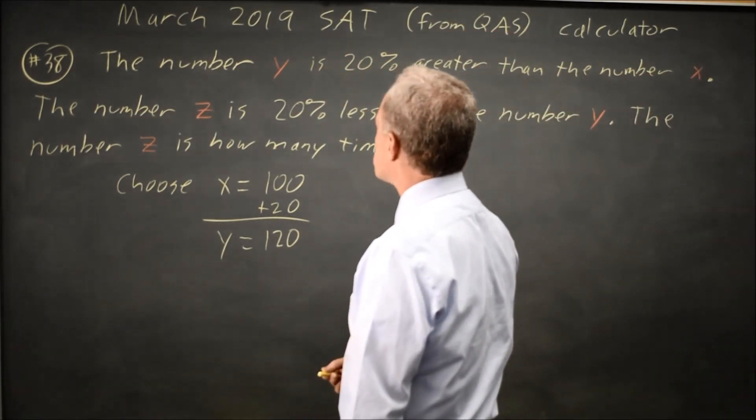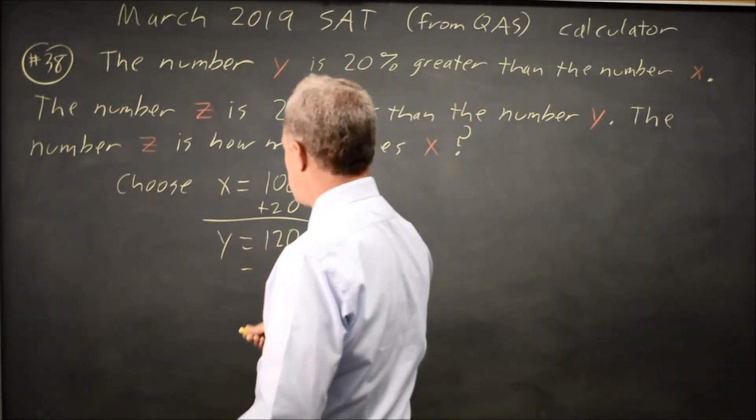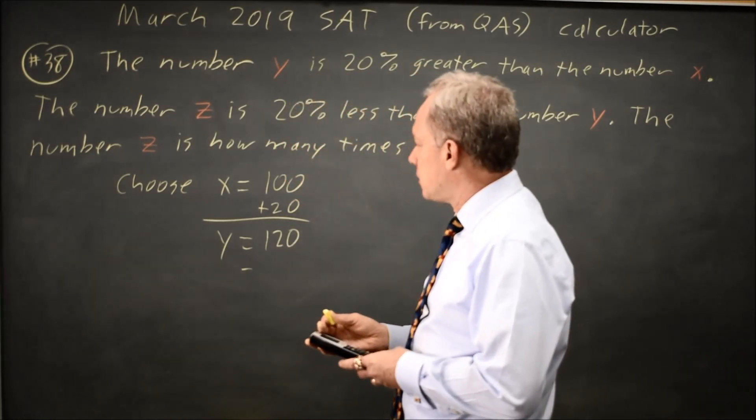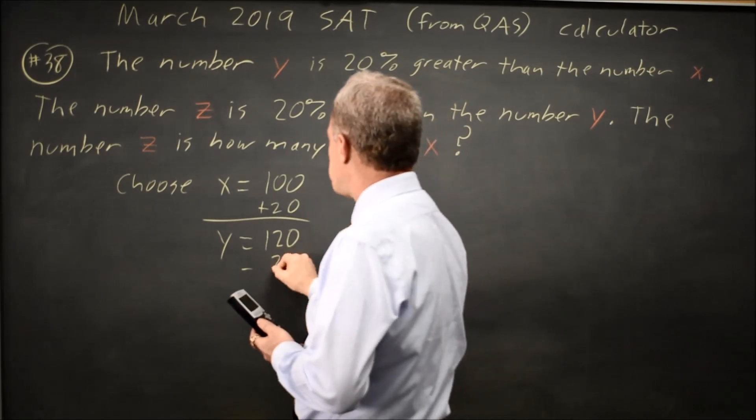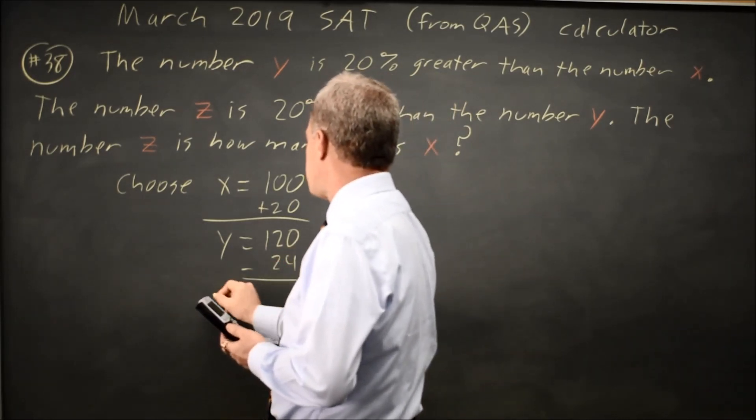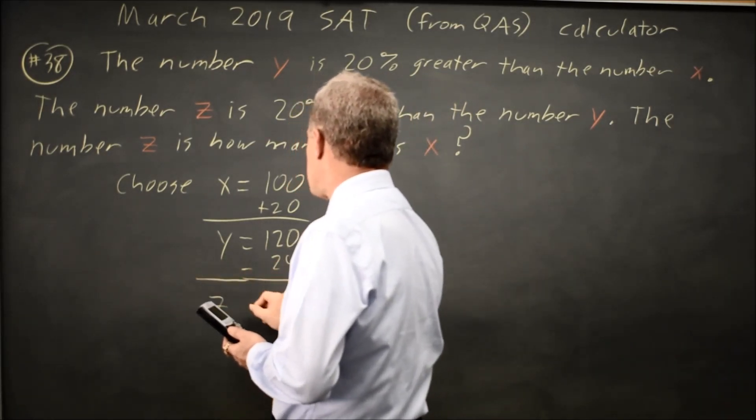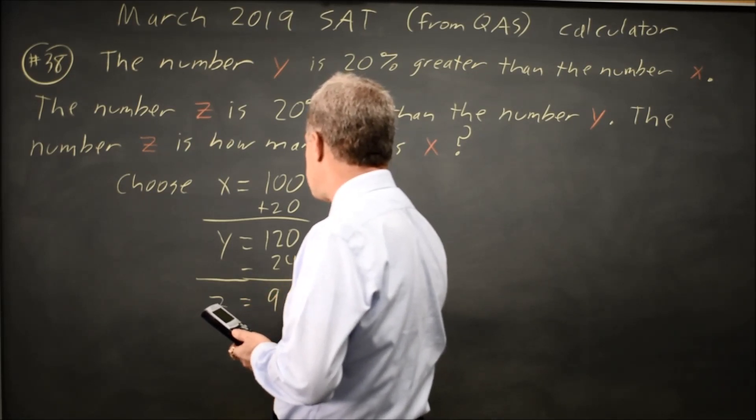and Z is 20% less. If I take 0.2 times 120, I get 24 and I'll be less by that much to get Z. Z equals 120 minus 24 is 96.